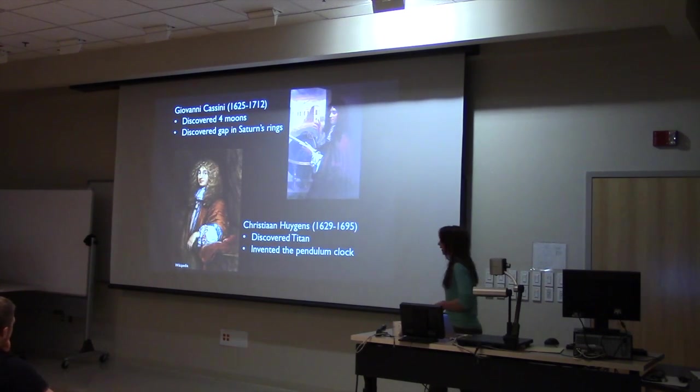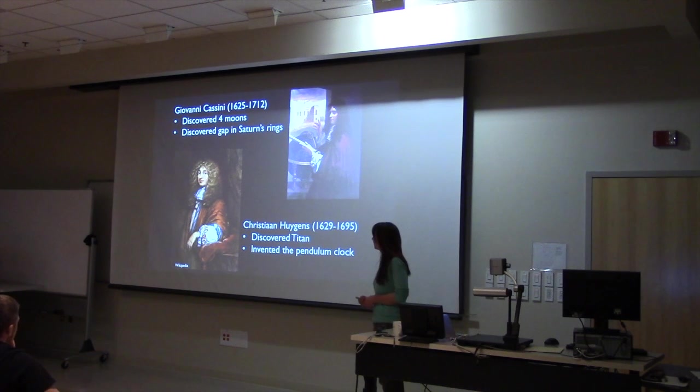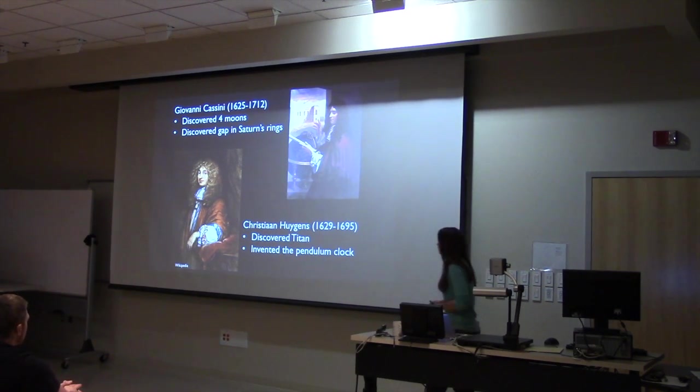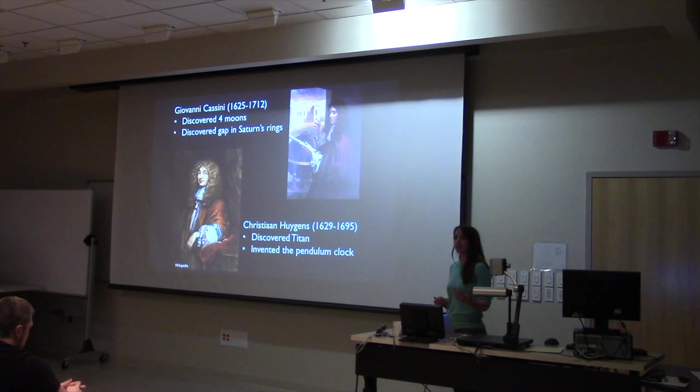Just to go way back, Saturn is one of the planets that's easily visible with our naked eye in the sky. It's the furthest planet that we can see easily. With some minor magnification, maybe a nice pair of binoculars or a small telescope, you can see the rings of Saturn.